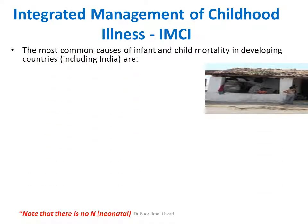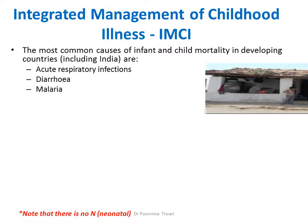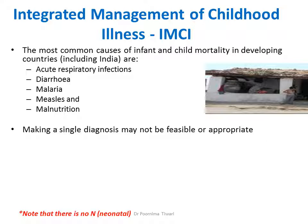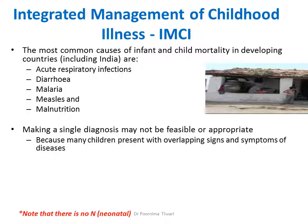What is IMCI? The most common causes of infant and child mortality in developing countries are acute respiratory infections like pneumonia, diarrhea, malaria, measles, and malnutrition. Making a single diagnosis may not be feasible when a child presents to the health center, and may not be appropriate because many children present with overlapping signs and symptoms of disease.